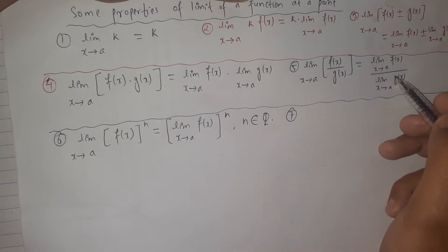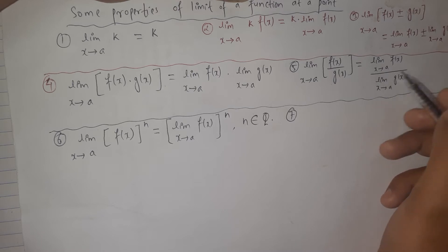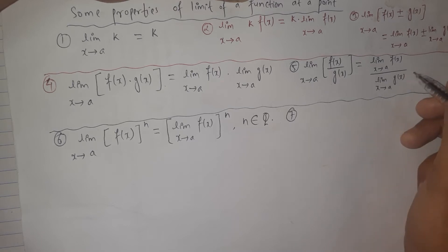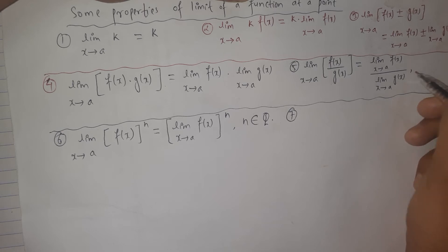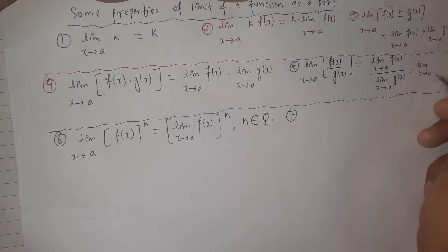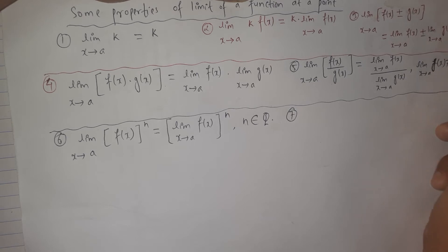An important condition for the quotient law: the denominator should not be equal to zero. If the denominator is zero, the fraction will be undefined. So the limiting value of G(x) when X approaches to a should not be equal to zero.